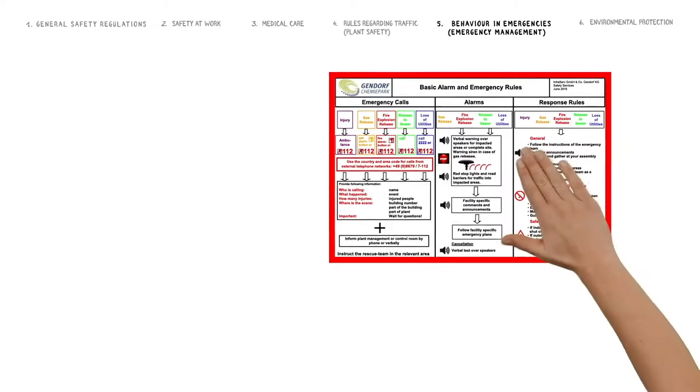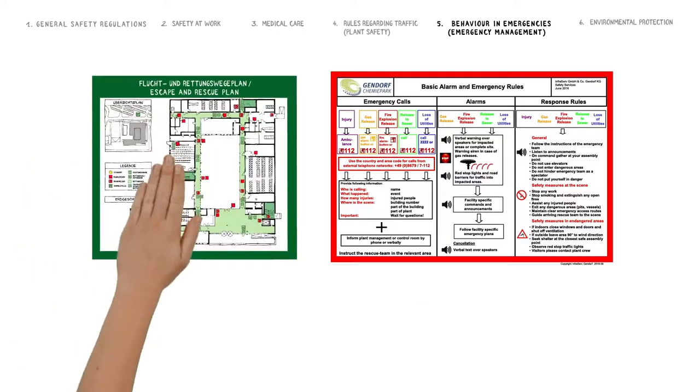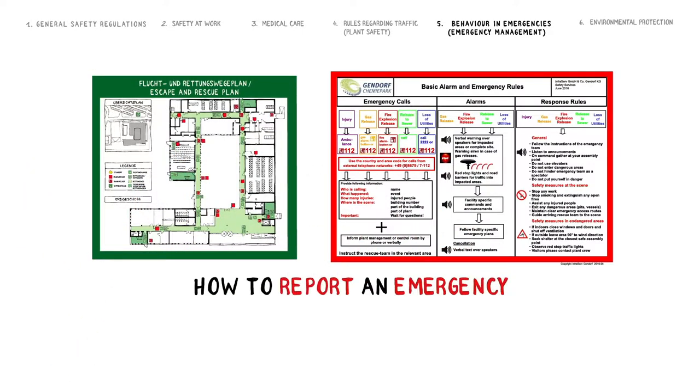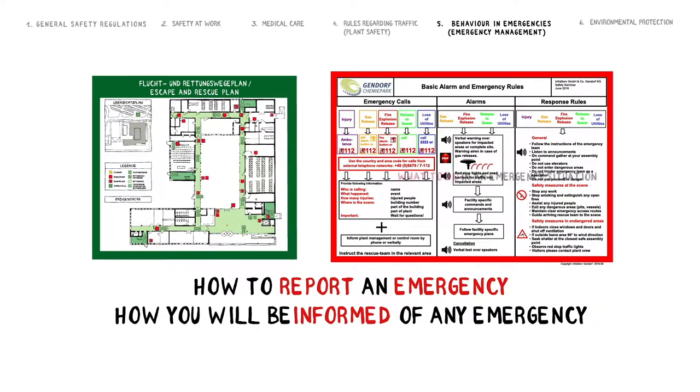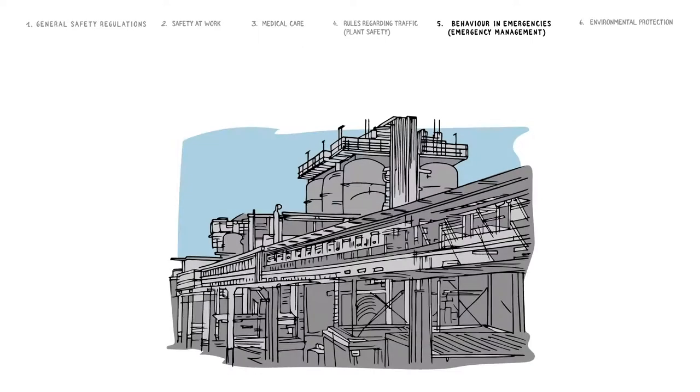Please take note of the chemical park-wide instructions regarding what to do in an emergency or in the event of an alarm, as well as the escape and emergency access routes. This details how to report an emergency, how you will be informed of any emergency, and what to do in an emergency situation. If you witness an emergency situation, report this immediately on the emergency number 112.